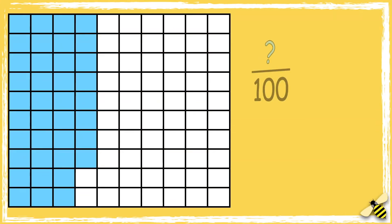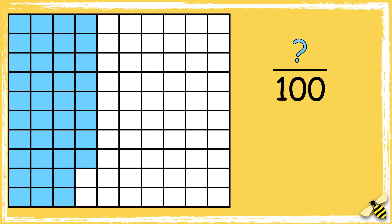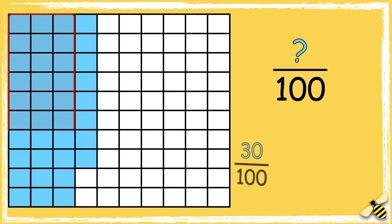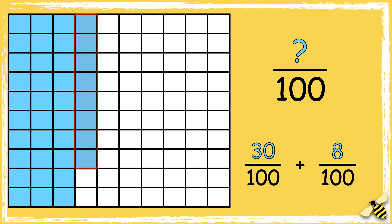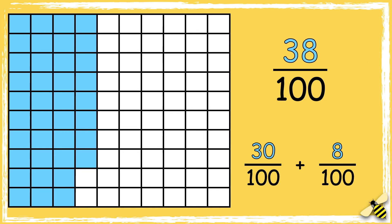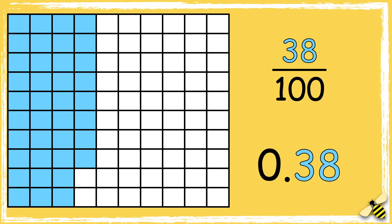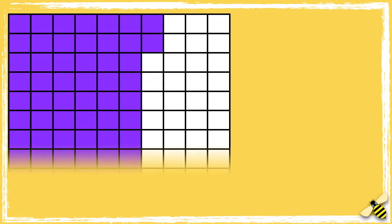What fraction of the grid is shaded? Pause the video to give yourself time to work out the answer. Press play when you're done. So we have thirty and eight, so the grid shows thirty-eight hundredths. As a decimal this is zero point three eight.